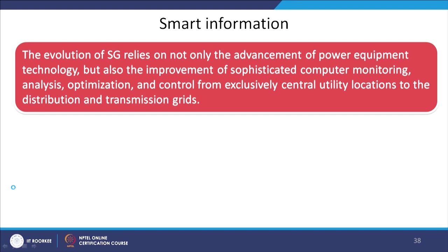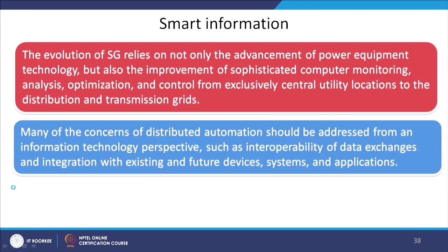To achieve that, we need smart information. The evolution of smart grid relies not only on the advancement of power equipment technology, but also on the improvement of sophisticated computer monitoring, analysis, optimization, and control — from exclusively central utility locations to the distribution and transmission grid. Many concerns of distributed automation should be addressed from an information technology perspective, such as interoperability of data exchanges and integration with existing and future devices, systems, and their applications.